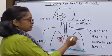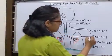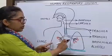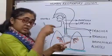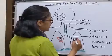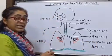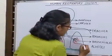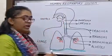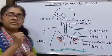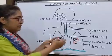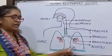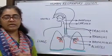The trachea then branches out into bronchi, one each into the lungs. The bronchi then further divide once they enter into the lungs, forming bronchioles. These bronchioles finally end in small air sacs or balloon-like structures called alveoli. The alveoli have an extensive network of blood vessels and provide a larger surface area for the exchange of gases.